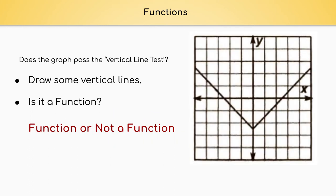Let's take a look at our next graph — is this graph a function or not a function? Let's use our vertical line test. I'm going to draw a vertical line right here and it goes through one point. I'll draw a vertical line here — the vertical line goes through one point on our graph. I'll draw another one here — it goes through exactly one point. So when we draw our vertical lines, they go through exactly one point here, here, and here — only one point each time. So this is a function.